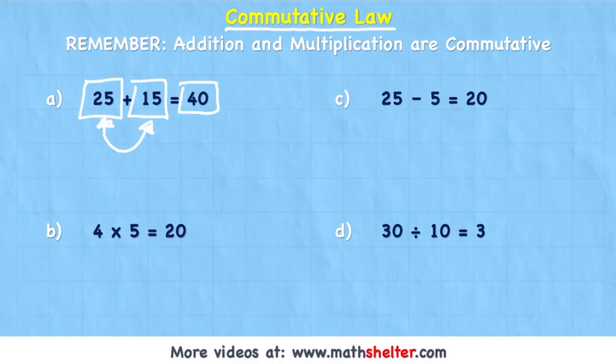25 add 15 is 40. But if I swap the 15 and the 25 around and have 15 added to 25, I also get 40. And that's the same with all addition questions. 1 plus 2 equals 3. 2 plus 1 equals 3. So it doesn't matter which way around my question is, I'm still going to get the same answer. So addition questions are commutative.